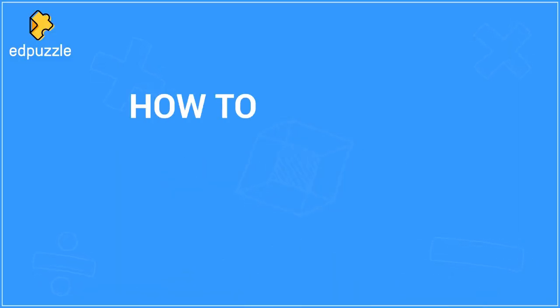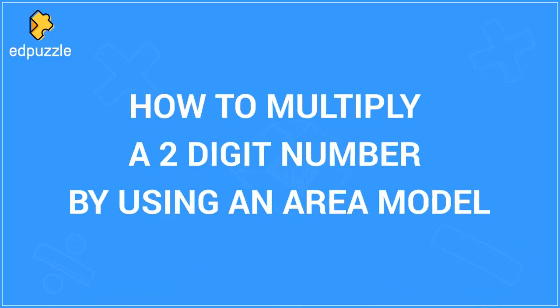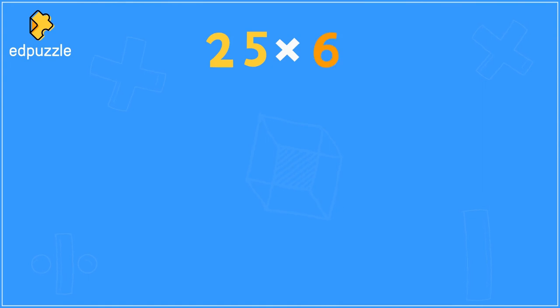Today we are going to be learning how to multiply a two-digit number by using an area model. Let's start by learning how to use an area model to solve the problem 25 times 6.